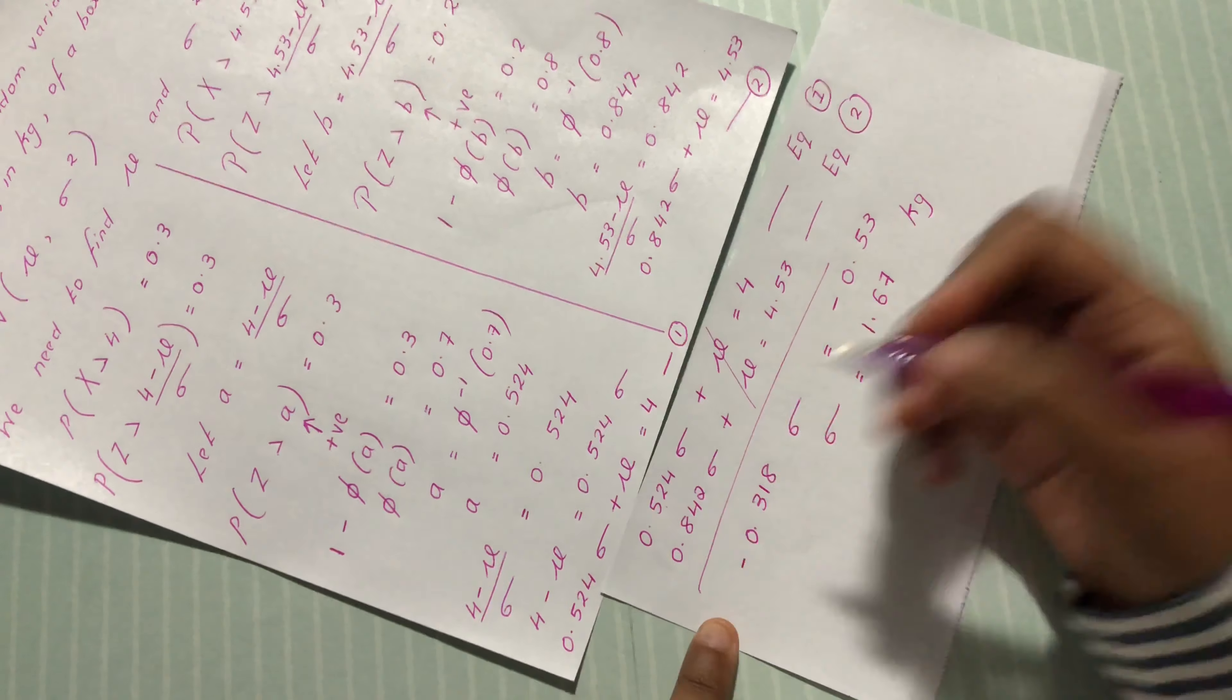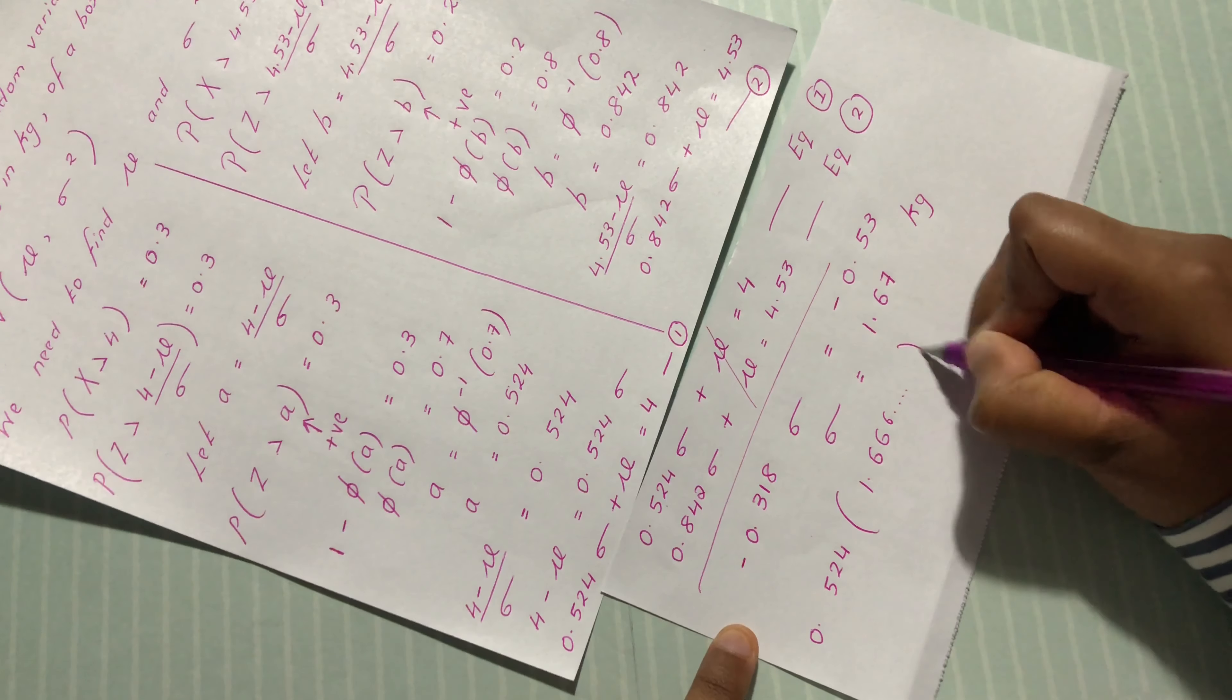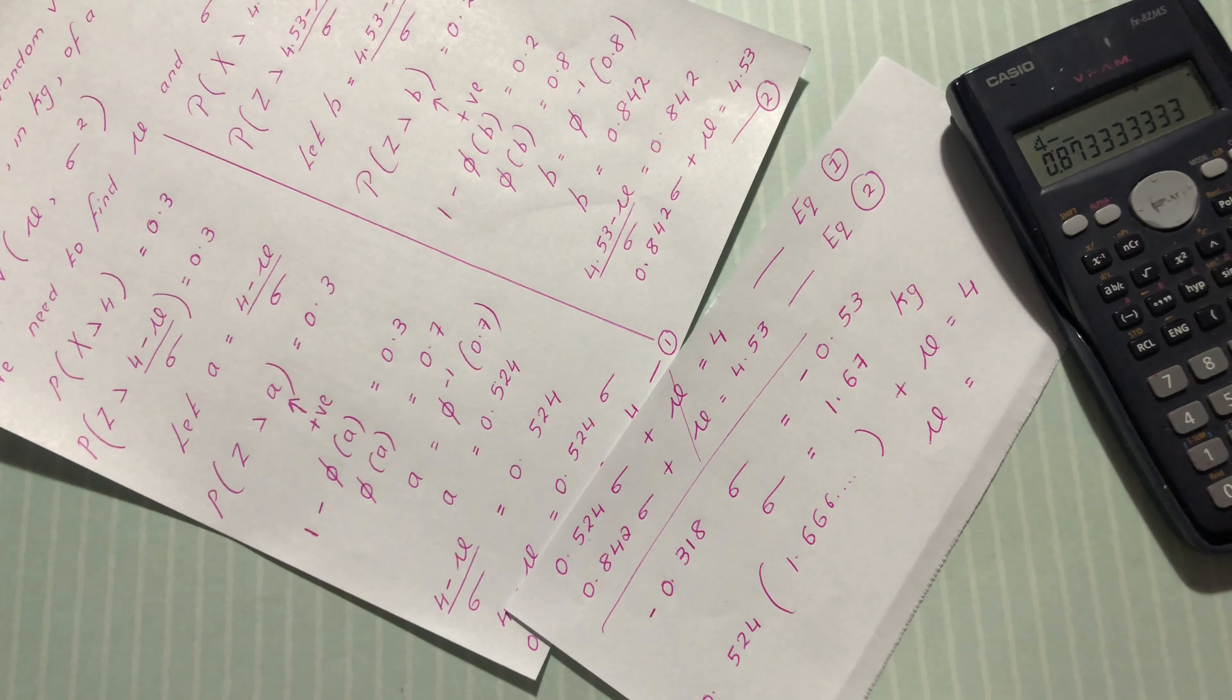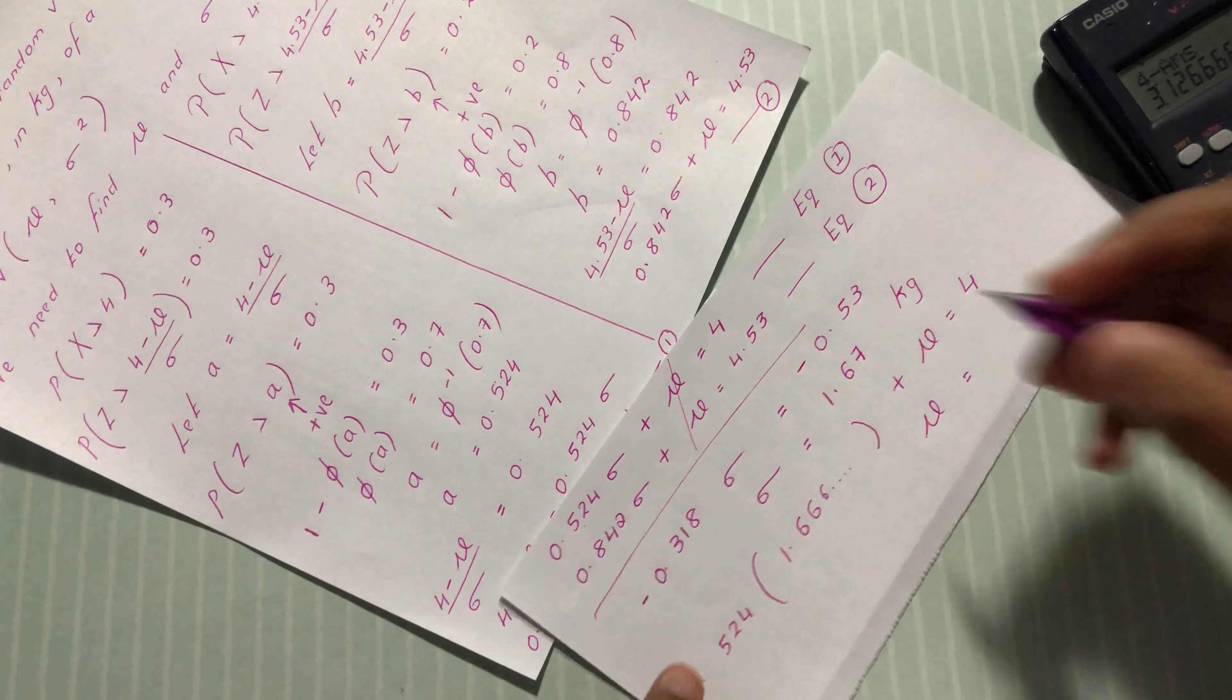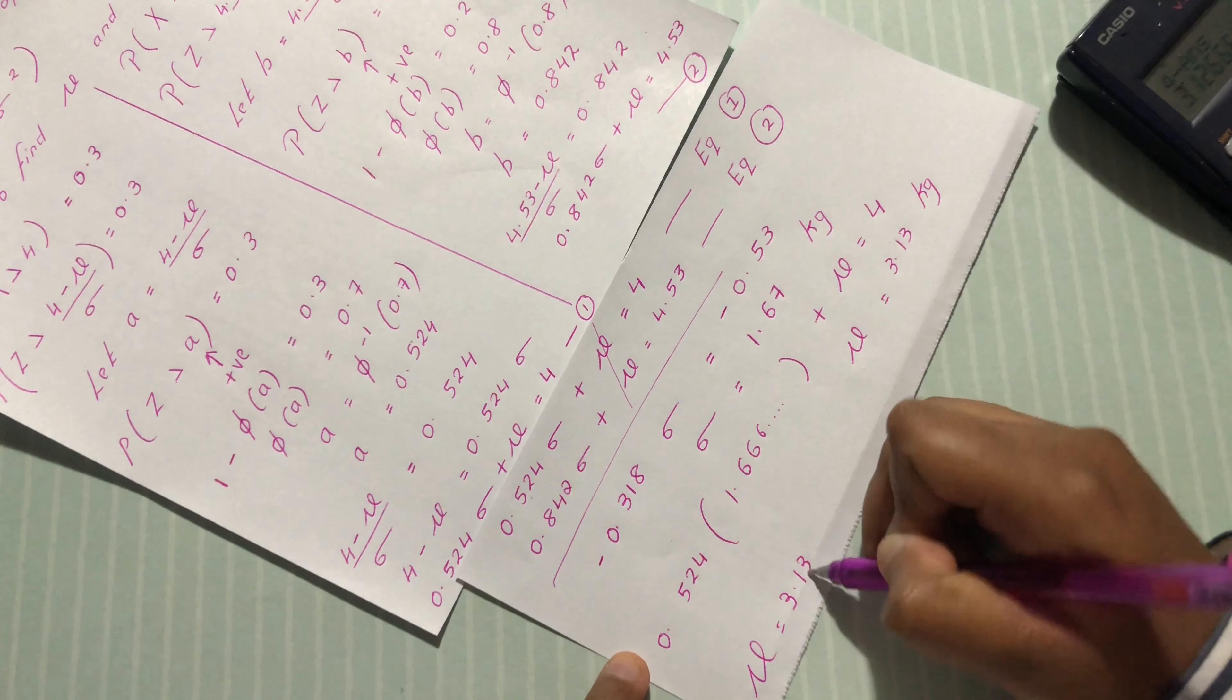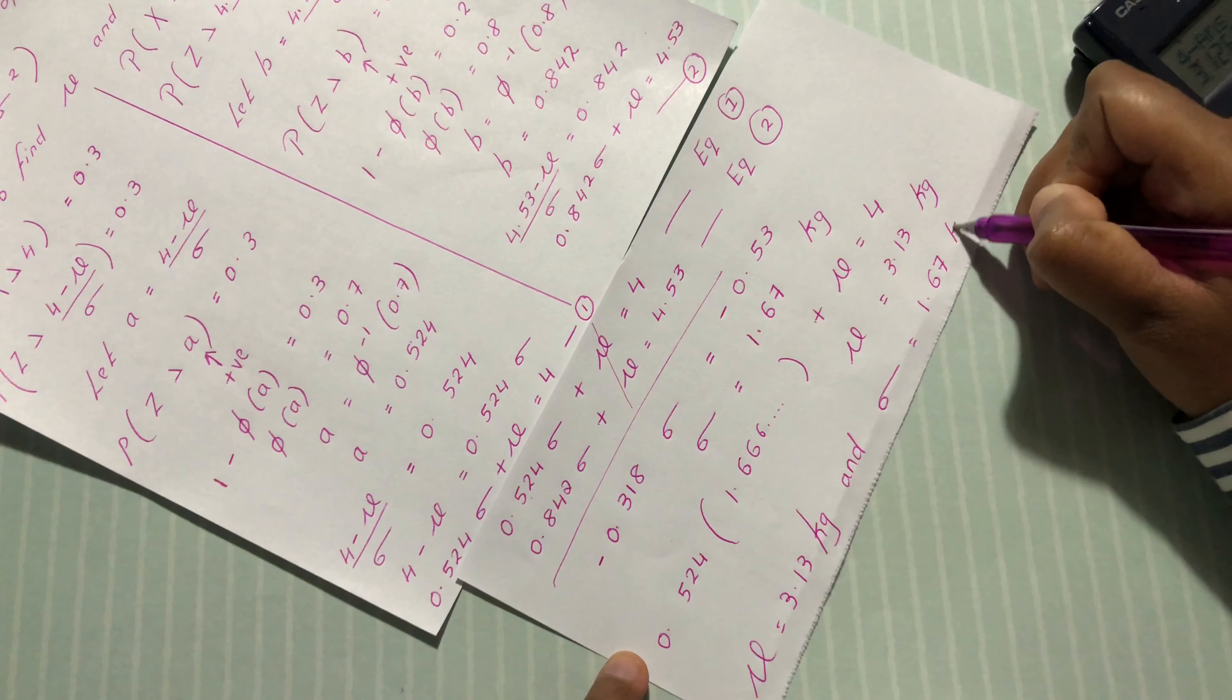Replace sigma in either one of these equations. We have 0.524 times 1.667 plus mu equals 4. Multiply by 0.524, then 4 minus the answer gives 3.13 to three significant figures. So mu is equal to 3.13 kg. The mean mu is 3.13 kg and sigma equals 1.67 kg.